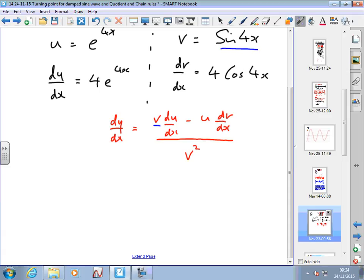What is v? It's sine 4x. What is the differential of u? It's 4 e to the 4x. What's u? e to the 4x. What's dv/dx? 4 cos 4x. And what's v squared? Sine 4x squared. So I just plug them into this rule.